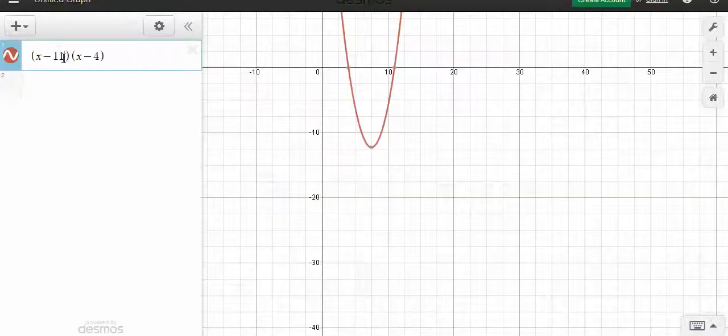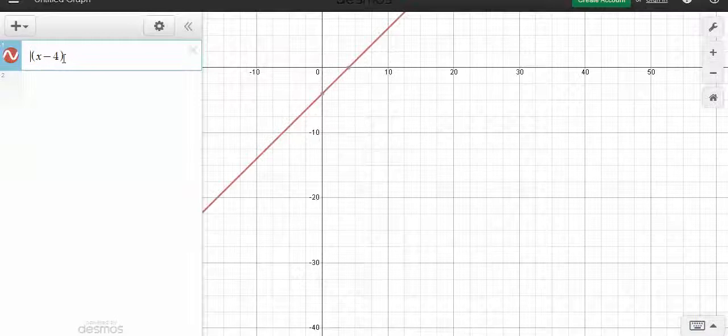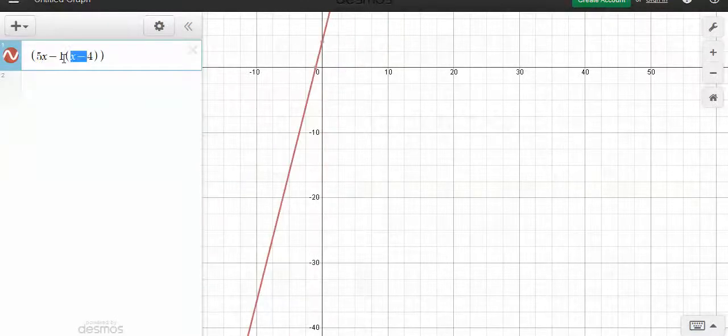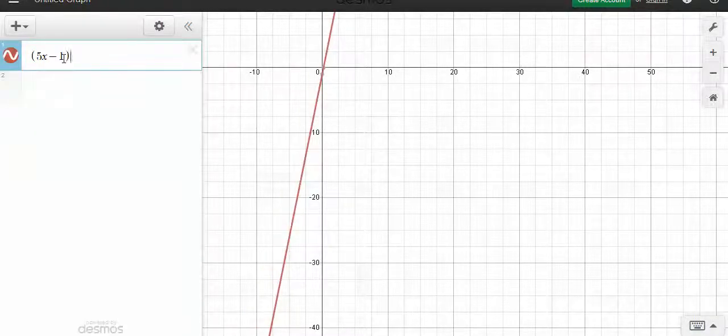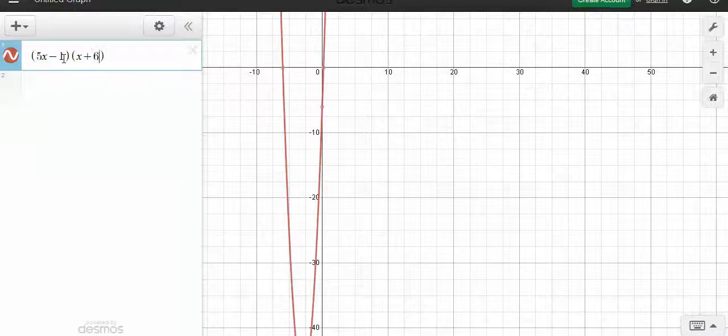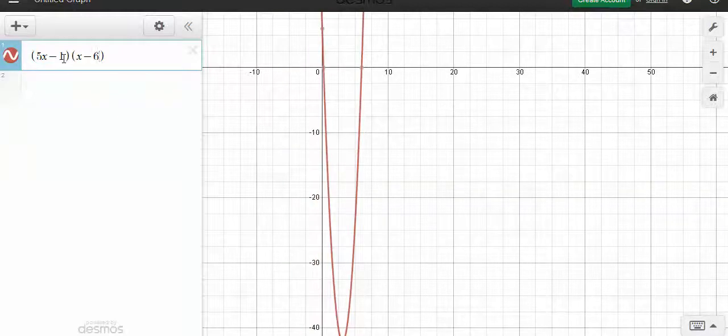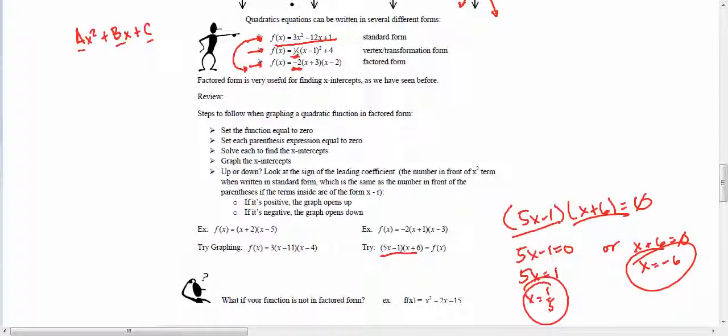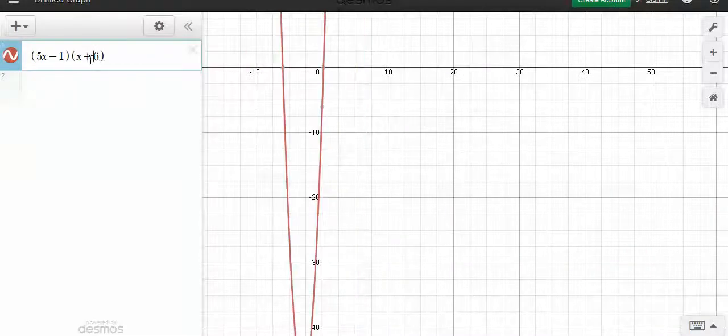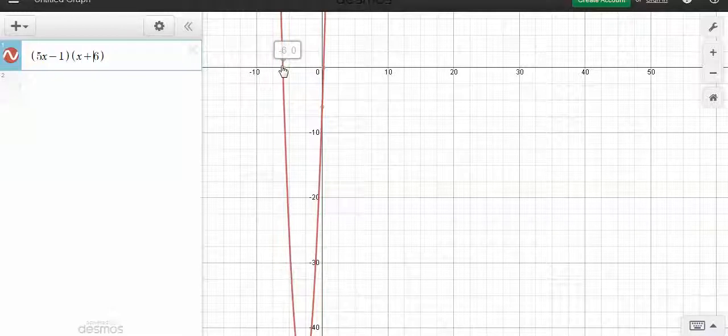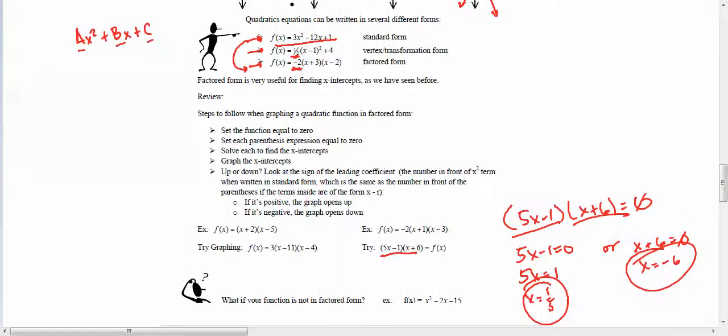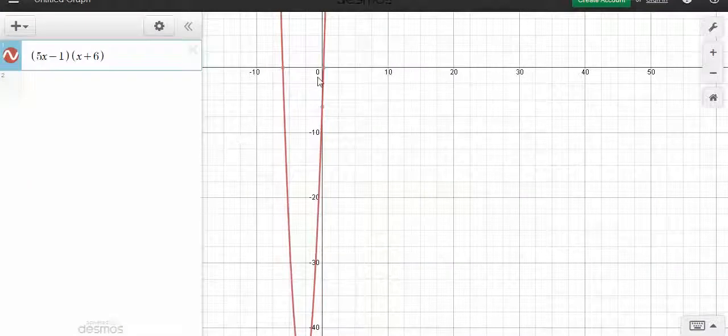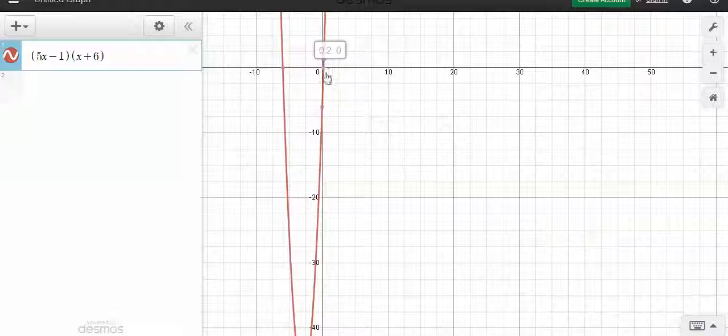Let's try that in Desmos. 5x minus 1, x plus 6. Is it x minus 6? I think so. No, x plus 6. There we go. So it crosses at negative 6 as I said before. And it also crosses at 1 fifth, which is also known as 0.2. There we go. Look at that 0.2 right there.